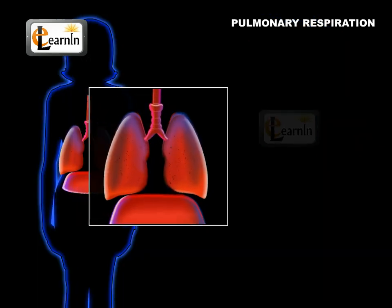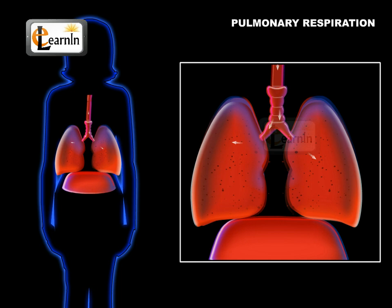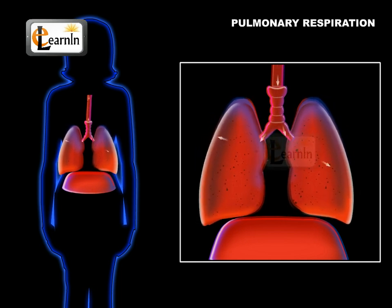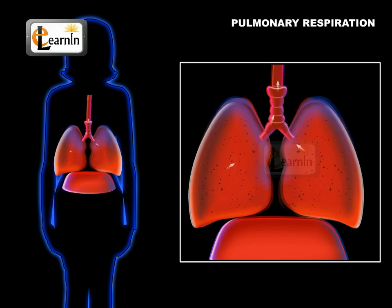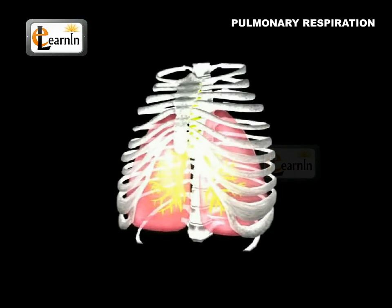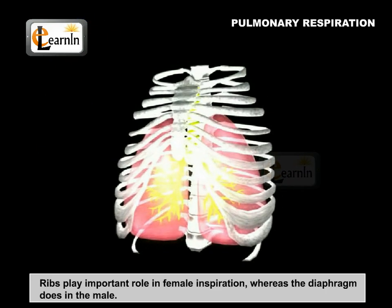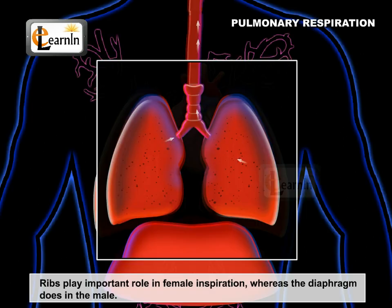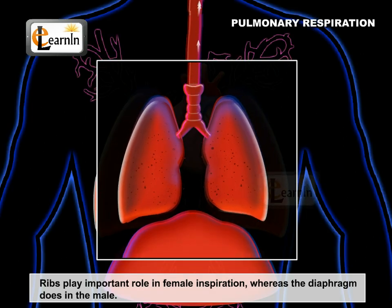In females, the diaphragm does not take part in inspiration to prevent injury to the fetus if the woman is pregnant. Therefore, the ribs play an important role in female inspiration, whereas the diaphragm does so in the male.